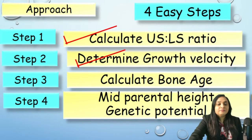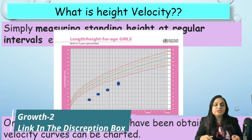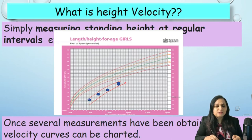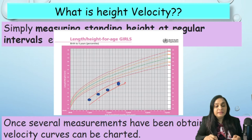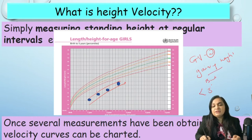The second step is to calculate growth velocity. Growth velocity is the periodic measurement of height plotted on a growth chart to see whether the child is following a curve. For example, a child at one year of age who is below the third centile but whose height is progressively increasing — from 60 to 70 to 75 cm — is showing a good increment, following his own growth line. We call this normal growth velocity: he is gaining height normally, even though still below the third centile.